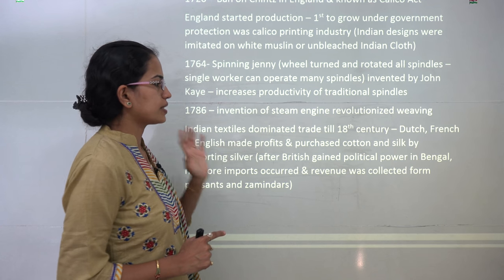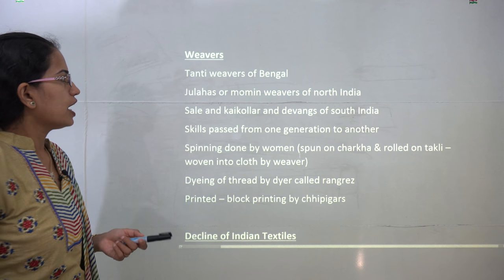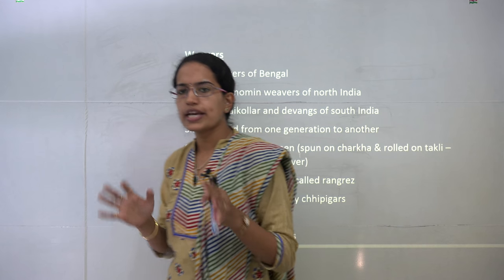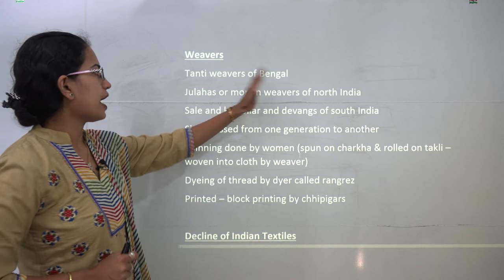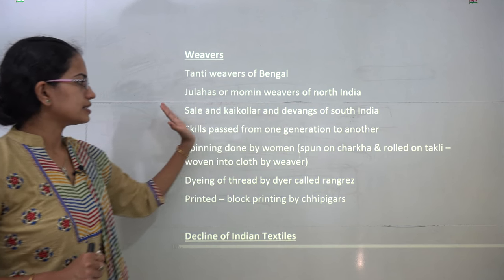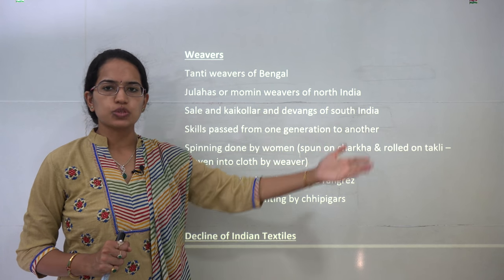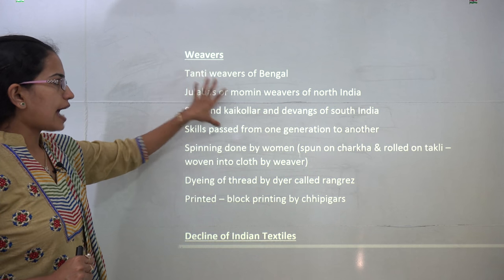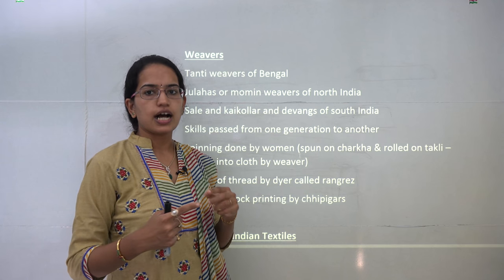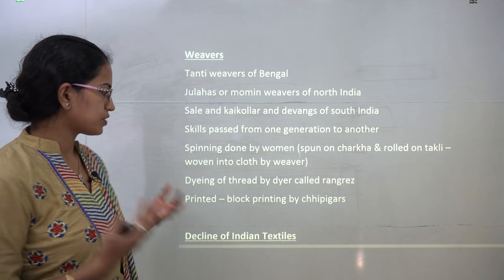Despite Britain's advances, Indian textile still dominated for a time. But slowly weavers from different areas were vanishing. From Bengal there were Tanti weavers; in North India, Jhulahas or Momins; in South India, Sail, Kali Koker and Devangs — all passing skills from one generation to the next. Spinning was mainly done by females, spun on the Charka and then rolled on the Takli, which were the basic equipment in the traditional textile industry.